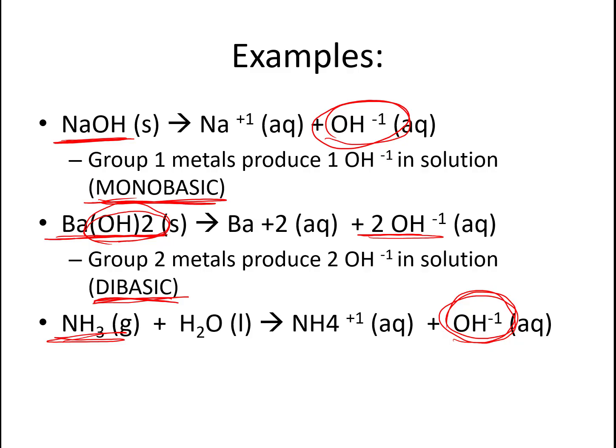Quick summary: acids release positive hydrogen or positive hydronium in water, and bases release negative hydroxide. If you release more than one hydrogen, you get a different type of acid. Acids are either monoprotic (one hydrogen), diprotic (two hydrogens), or triprotic (three hydrogens). Bases are monobasic (one hydroxide) or dibasic (two hydroxides).